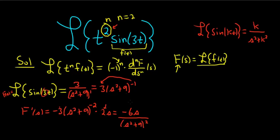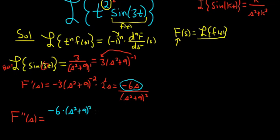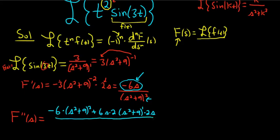Now if n had been 1, we would have been set, but it's 2, so unfortunately we have to take the derivative again. Using the quotient rule for F double prime of s: the derivative of the top piece, negative 6, times the bottom piece (s squared plus 9) squared, minus the top piece — but minus and minus is plus — so plus 6s times the derivative of the bottom piece. By the chain rule, bring down the 2, leave the inside untouched, subtract 1 from the exponent, multiply by the derivative of the inside. All over the bottom piece squared, which is (s squared plus 9) to the 4th power.